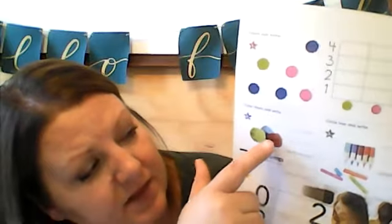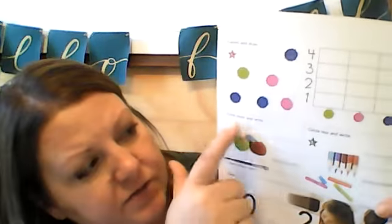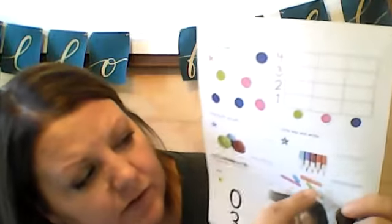On the back, you are supposed to use this graph to graph those paint dots. Okay. Down here is you write the numbers of the two items. You circle the one that is more, write the number of the two items and circle the one that is less. And then down here, you fill in the missing number.